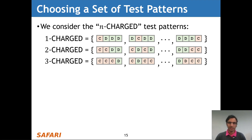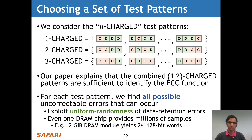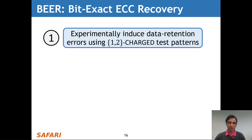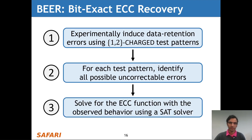We simply need to choose a set of test patterns for our analysis. We consider the n-charge test patterns, each of which sets n bits to the charged state. Our paper explains that the combined one and two charge test patterns suffice to identify the ECC function. For each pattern, we find all possible uncorrectable errors by exploiting the uniform randomness of data retention errors — even one DRAM chip provides millions of samples. We put this together into a three-step methodology: first, experimentally induce data retention errors using the combined one and two charge test patterns; second, identify all possible uncorrectable errors for each test pattern; and third, solve for the ECC function using a SAT solver.